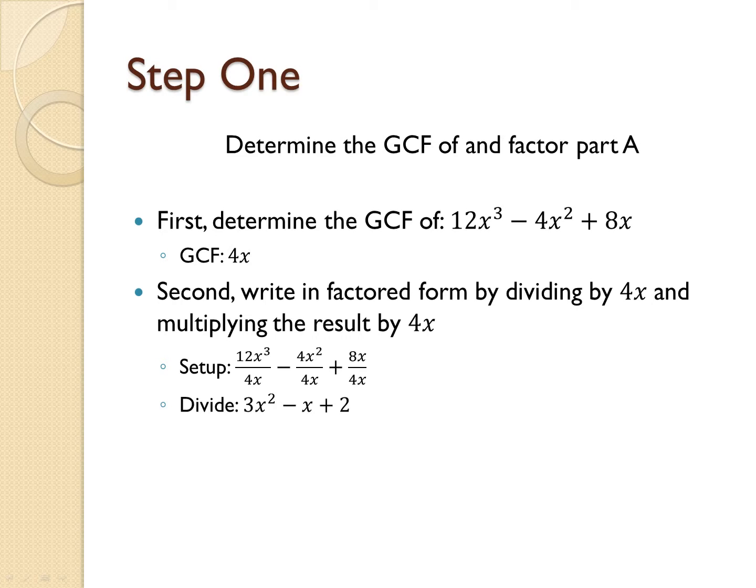So now, to write this in factored form, we need to multiply that result by 4x and leave it as two factors being multiplied, which would be 4x times 3x squared minus x plus 2.